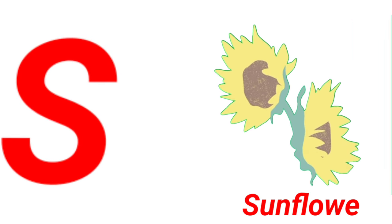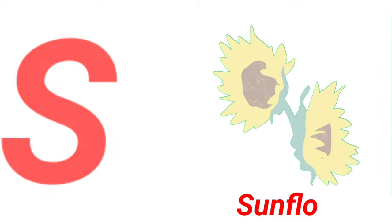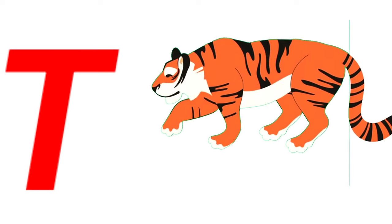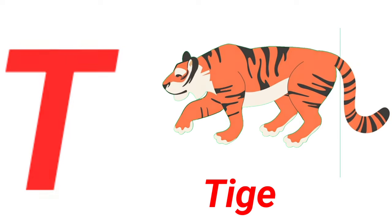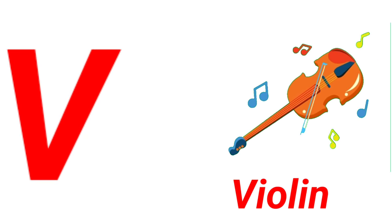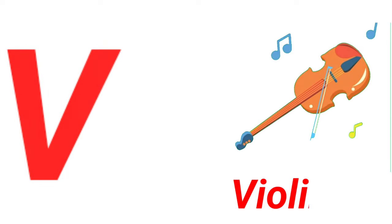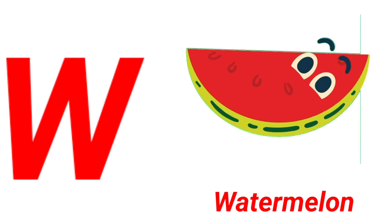S for sunflower, T for tiger, U for umbrella, V for violin, W for watermelon.